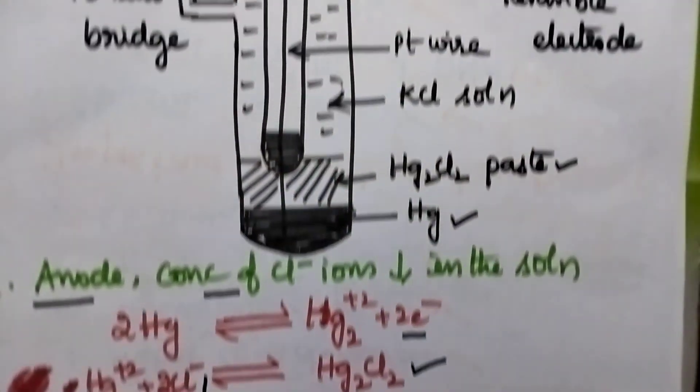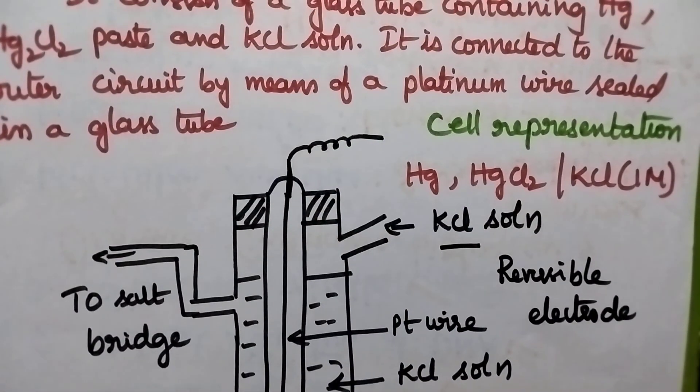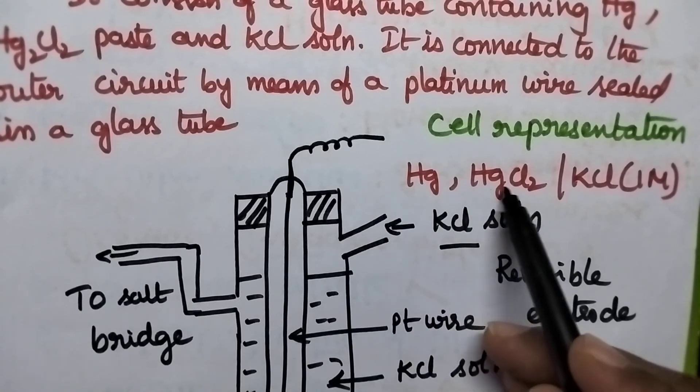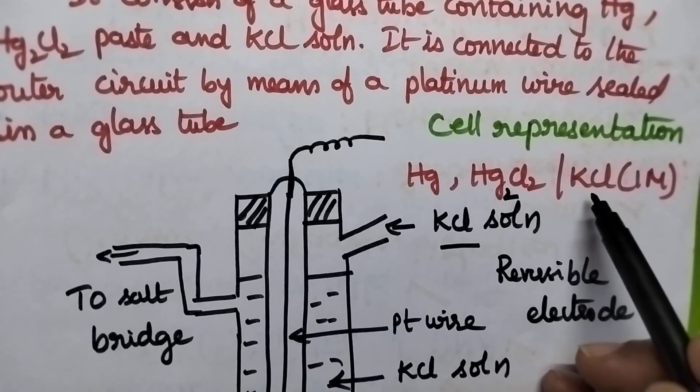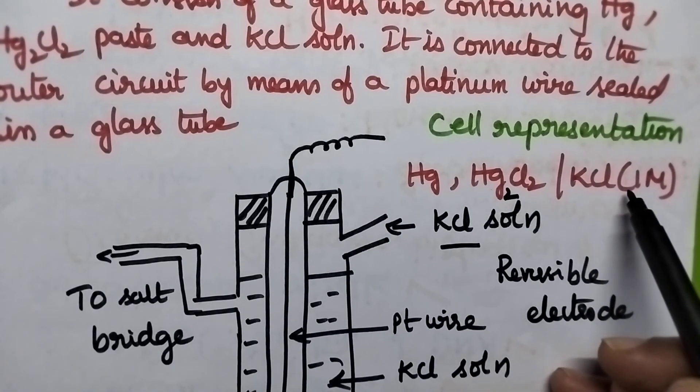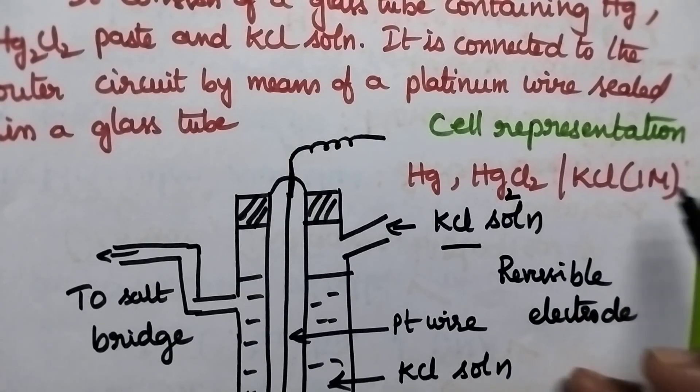And this calomel electrode can be simply represented as mercury, mercurous chloride, and KCl solution which is maintained at 1 molar solution.